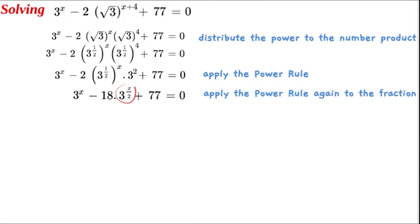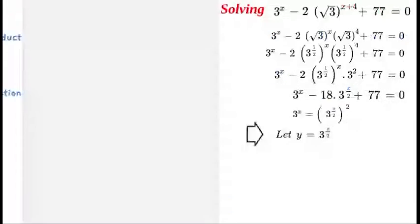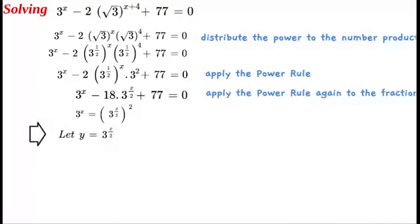Here we can see that we can convert 3 to the power of x into a square of that value, by writing 3 to the power of x as 3 to the power of x over 2, all squared. Since we have this variable separated, we can assert that y is equal to 3 to the power of x over 2.